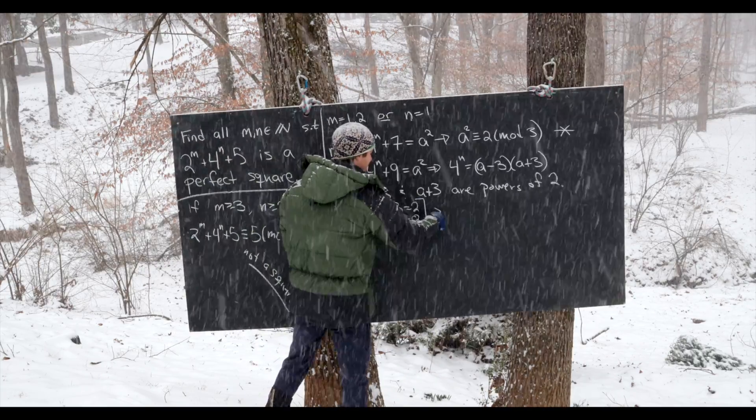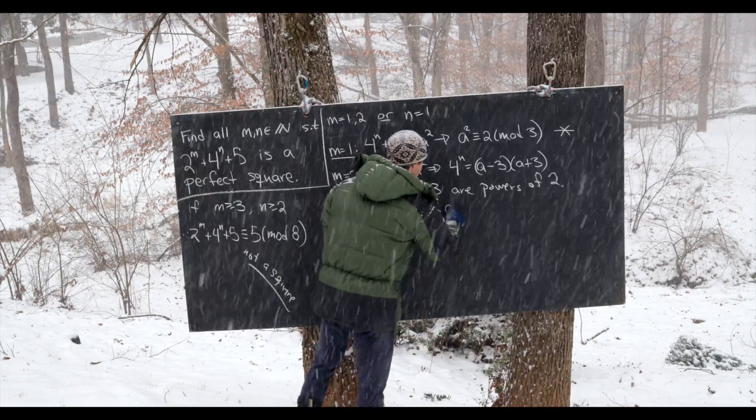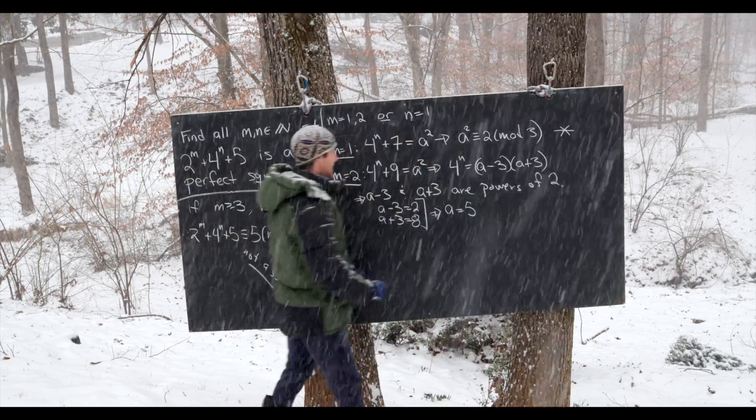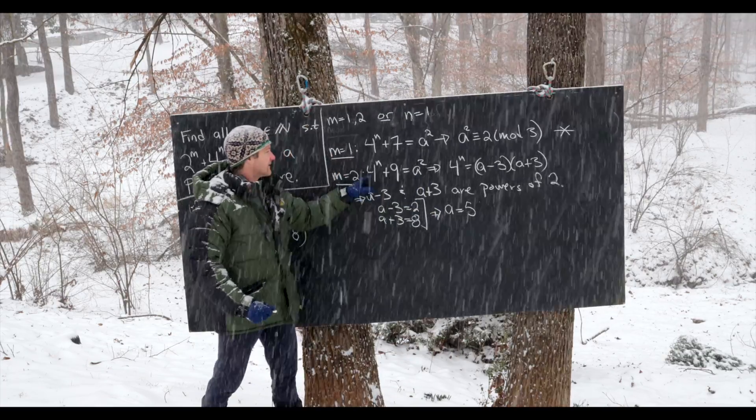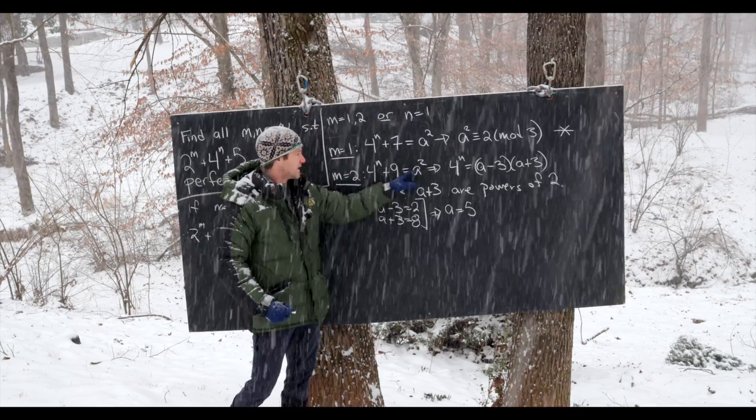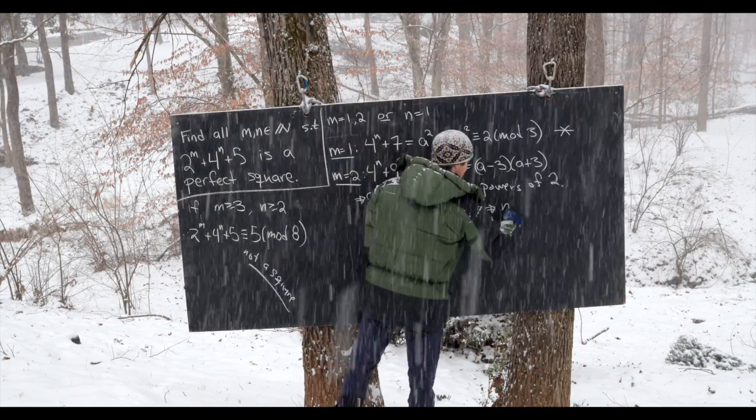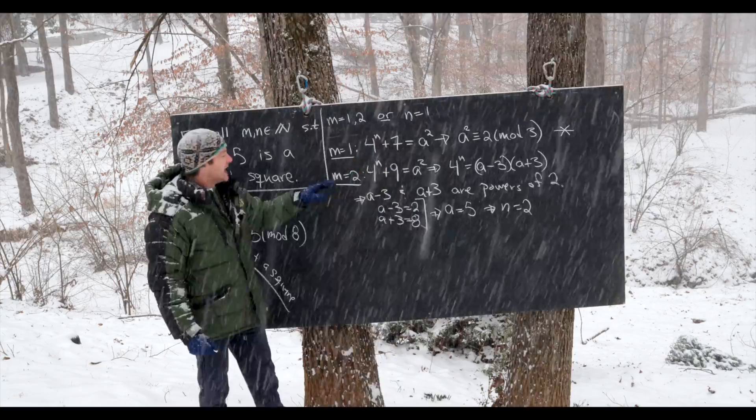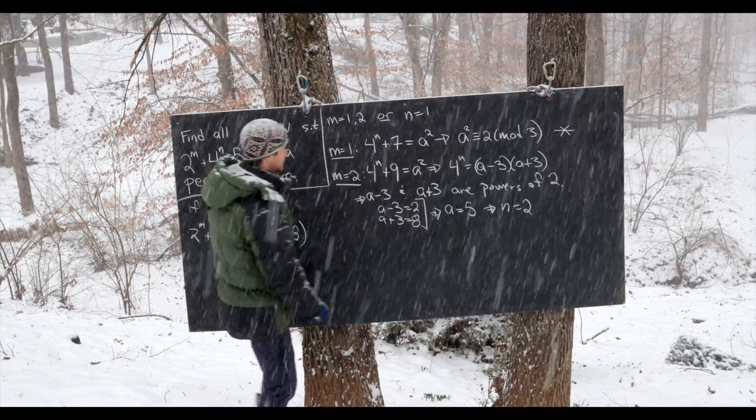So now smushing this together, well actually we can only solve one of them if you'd like. We'll get that a is equal to 5. But now plugging that back in up here, we see that 4 to the n is 25 minus 9. So 4 to the n is 16. So that means that n is equal to 2. And that gives us our first solution of m equal 2 and n equal to 2.